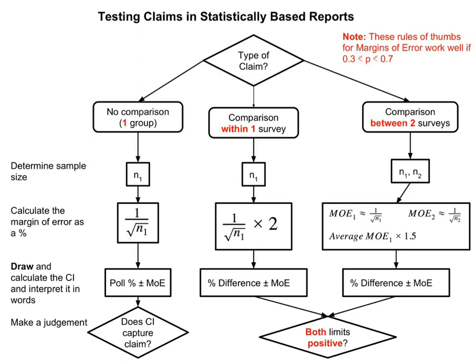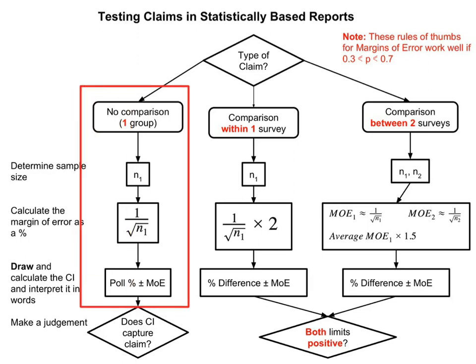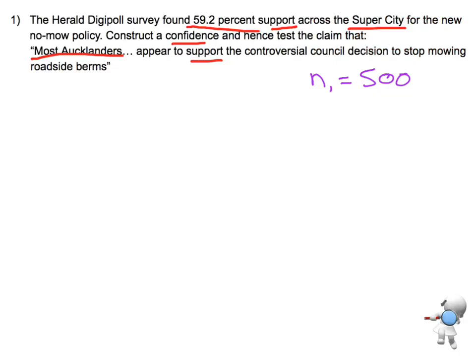That means I am in this situation here. I'm going to start off by looking for my margin of error formula, which is 1 over the square root of n. Then I'm going to do my confidence interval, which is your percentage plus or minus that margin of error. So that's what I'm going to do now.